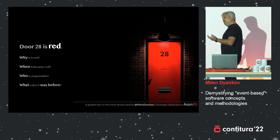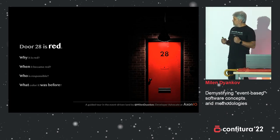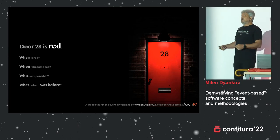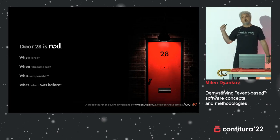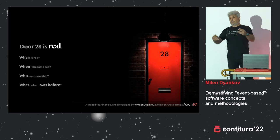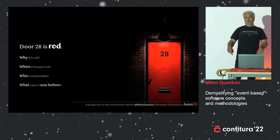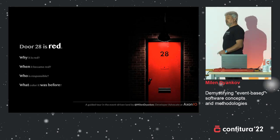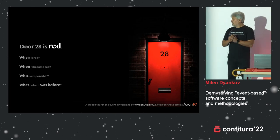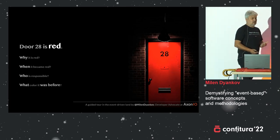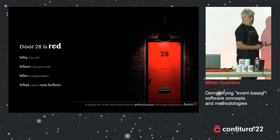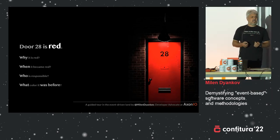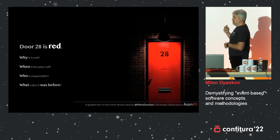Normally this is not a problem, because what happens in the systems you work with most often is that in some database, at some record, the ID 28 property of color now says red. But what you cannot do when you store information this way is answer these questions: why is it red? When did it change? Who changed it? And what was the color before? Those are the tough questions to answer if your database only says that ID 28 is color red.